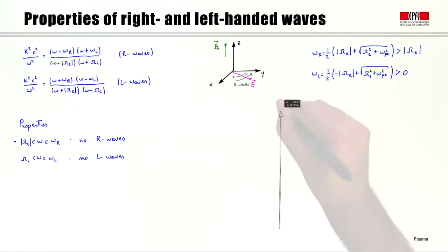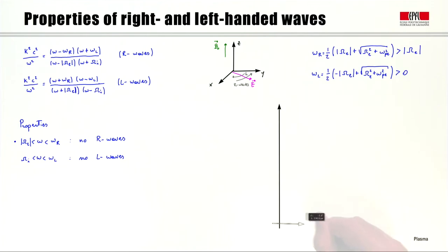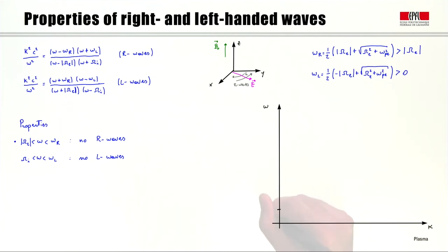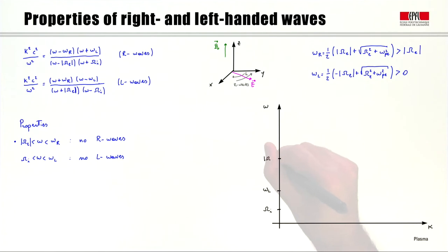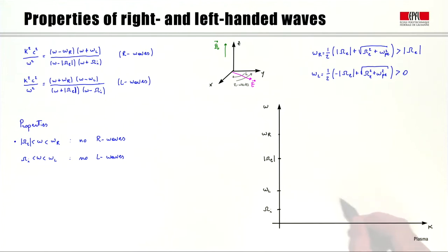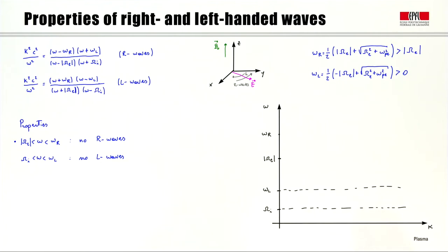If we draw a diagram representing frequency as a function of wave number, the frequencies of interest appear in the following order along the frequency axis: ωi, then ωl, then the electron cyclotron frequency ωe, and ωr. In the region between ωi and ωl there are no left-handed waves, and in the region between ωe and ωr there are no right-handed waves.